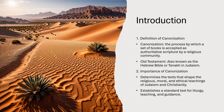The first thing we need to understand is how we define canonization. It is the process by which a set of books is accepted as authoritative scripture by a religious community. Over a long period of time and over multiple meetings and councils — particularly at the Council of Jamnia in 90 CE — it was finally determined that these 39 books came together as one Old Testament canon.